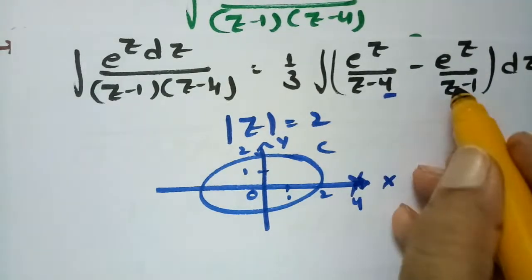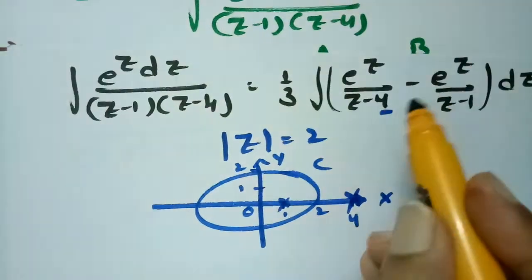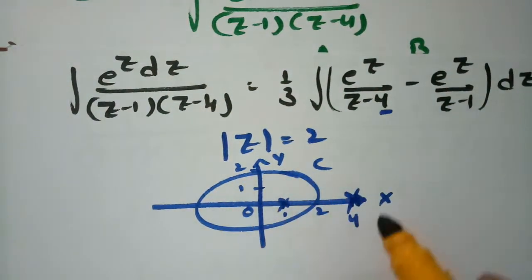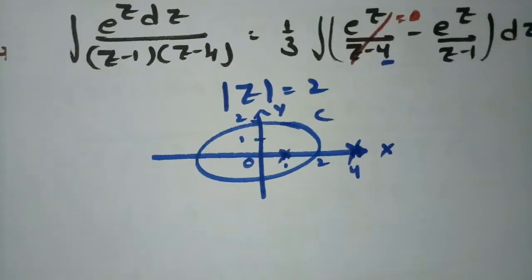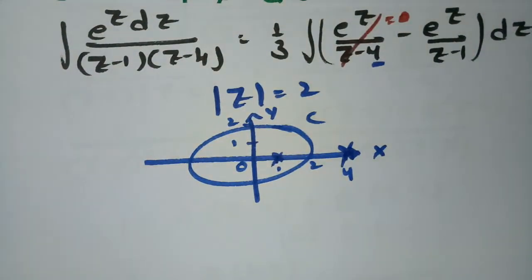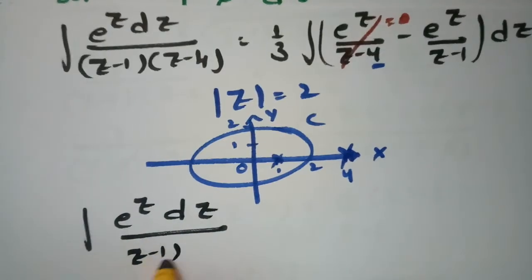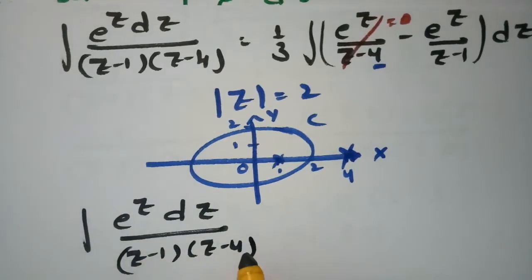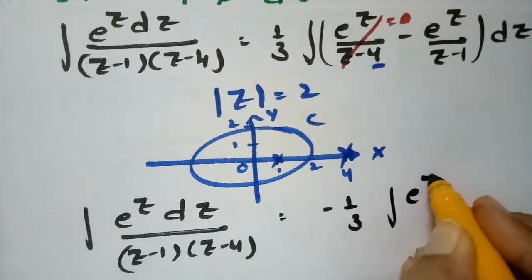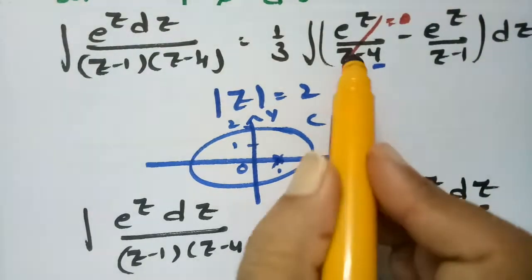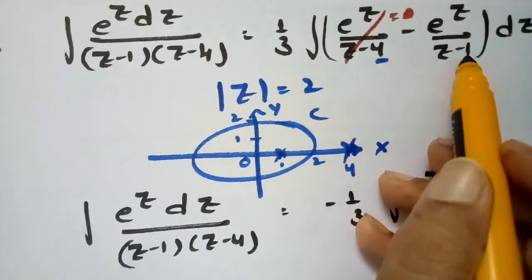The point 4 is outside the circle and 1 is within the circle. To apply Cauchy's integral formula, if z₀ is outside the given circle, the integral becomes 0. So the integral involving (z-4) becomes 0, and only the integral involving (z-1) is applied.